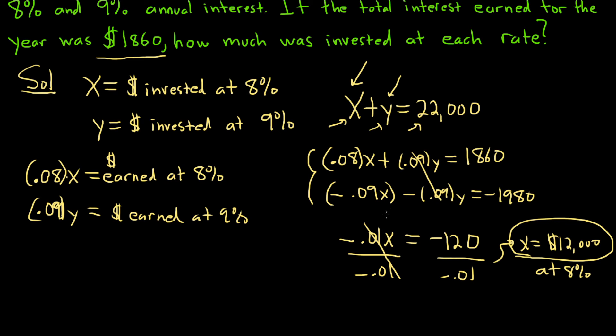So it looks like we invested $12,000 at 8%. And if you think about it, we invested $22,000 total. So what's left? Well, Y must be equal to $22,000, that's the total invested, minus what we invested at 8%. So that's going to be $10,000.